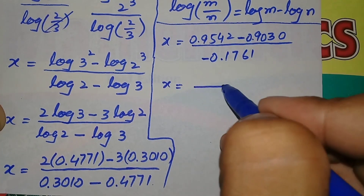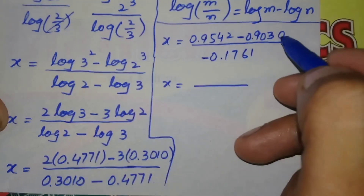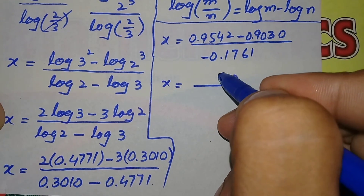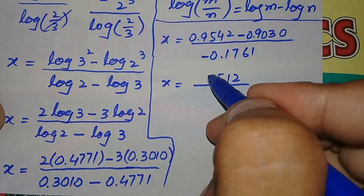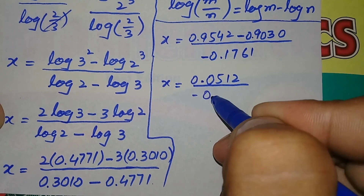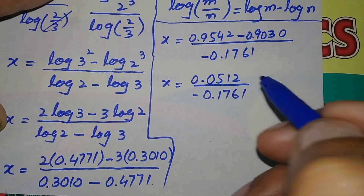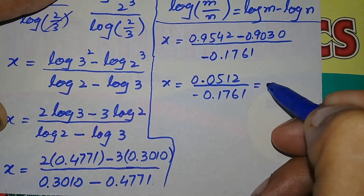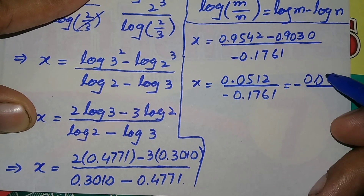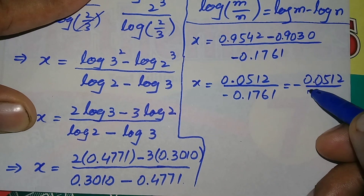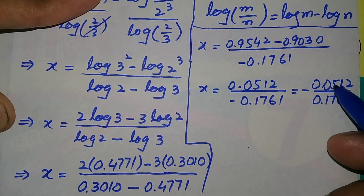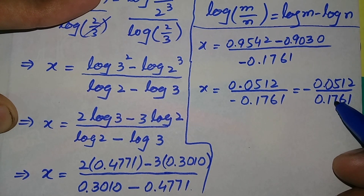So x equals: subtracting the numerator — 2 minus 0 gives 2, 4 minus 3 is 1, 5 minus 0 is 5, and 9 minus 9 is 0 — giving 0.0512 in the numerator, divided by negative 0.1761. Dividing a positive number by a negative gives a negative result.